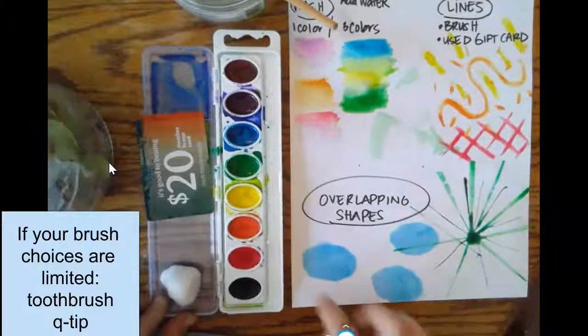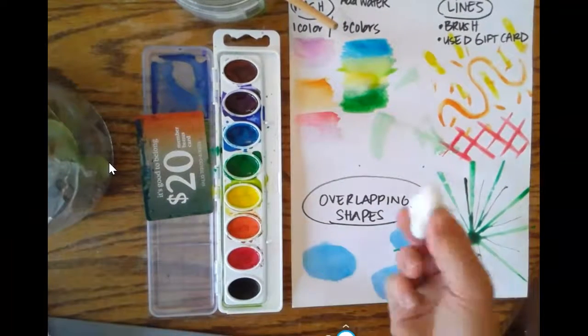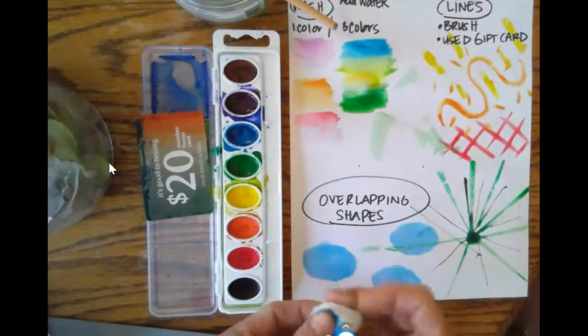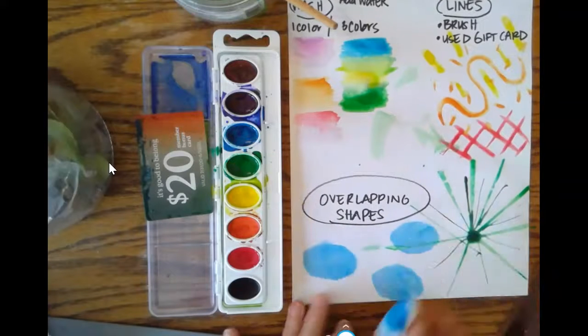The final technique I'd like you to explore today is overlapping shapes. I use this cotton ball like I mentioned, and what I did was I stamped these three blue circles and let them dry.